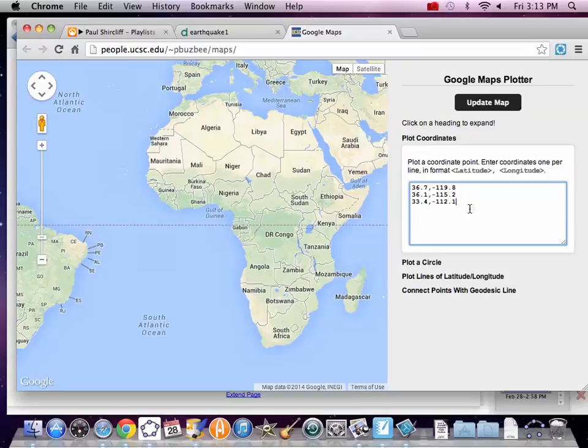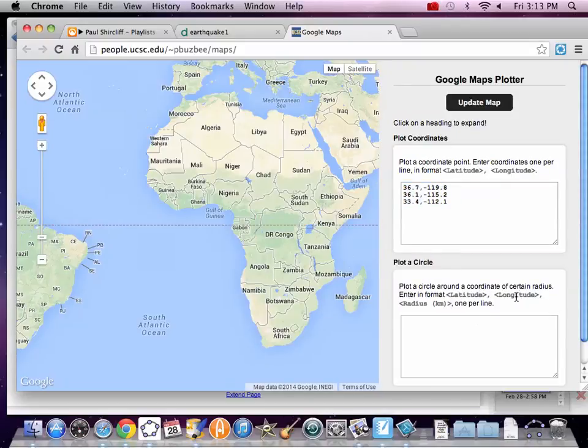Looking good. All right, I'm going to copy those points because those are going to be my center points. When I plot a circle, I actually have to tell it latitude, longitude. I have to tell it the center of the circle. And then radius. So I just copied them.